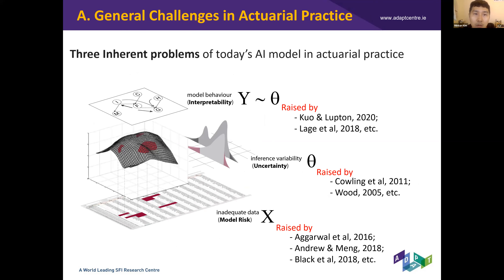Here are the general challenges in actuarial practice that cause a mismatch between current AI models and use cases. The first is uncertainty, the second is interpretability, and the third is model risk. In actuarial practice, inference variability is treated as a form of risk — actuaries and insurers take this very seriously and require any actuarial model to produce a full distribution so they can perform uncertainty analysis and quantification.